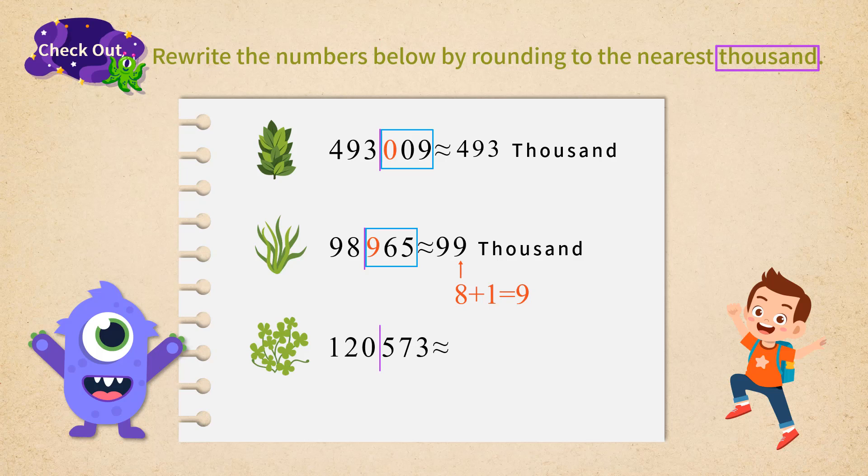For the last number, 120,573, the first number after the thousandth place is 5. 5 equals 5. This case is the same as the case of greater than 5. The thousandth place is added by an extra 1, with all the trailing numbers rounded off. So 120,573 is approximately equal to 121,000.